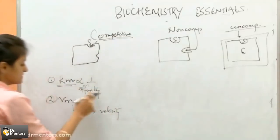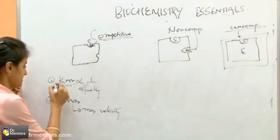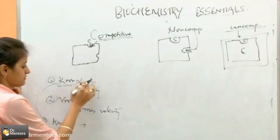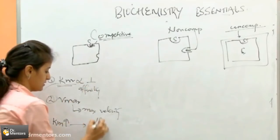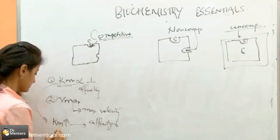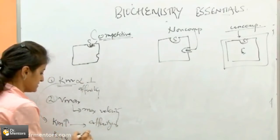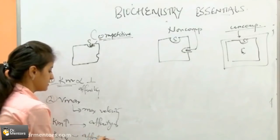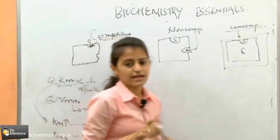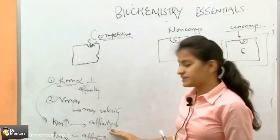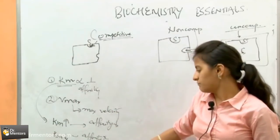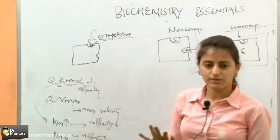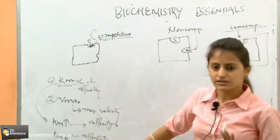When we say Km is inversely proportional to affinity: if Km increases, the affinity will decrease; and if Km decreases, the affinity will increase. So with any inhibition, affinity will decrease — so Km will increase or remain constant, but it will not decrease.